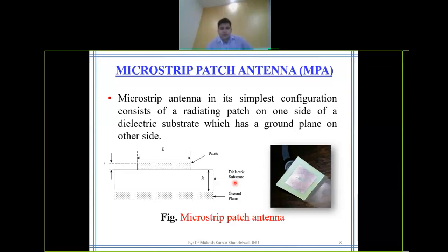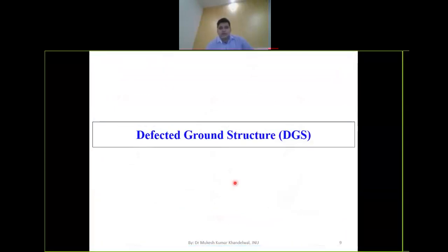The defective ground structure evolved around the year 2000 and is still under active research. Many researchers are using defected ground structures in various forms. We are going to discuss what the phenomenon is, what the mechanism is, and how DGS works.